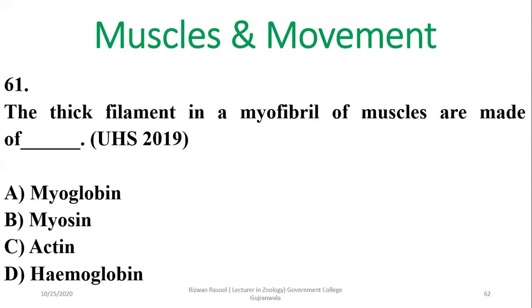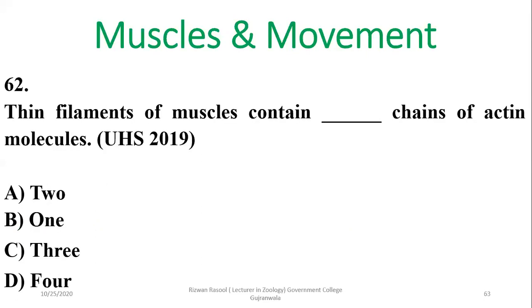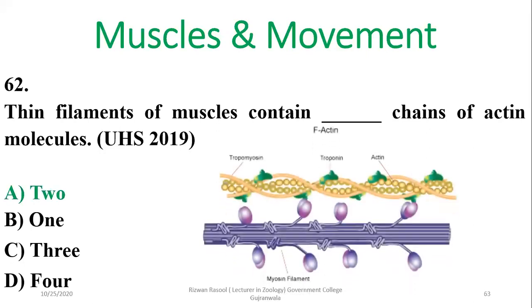Question 61: The thick filament in the myofibril of muscles is made up of myosin, and the thin filament is made up of actin — beta is the right option. Question 62: The thin filament contains two actin chains, as shown, surrounded by two tropomyosin chains. Alpha is the right option.